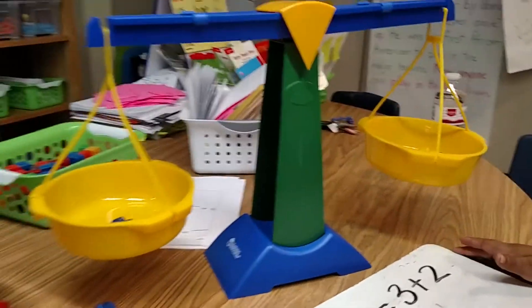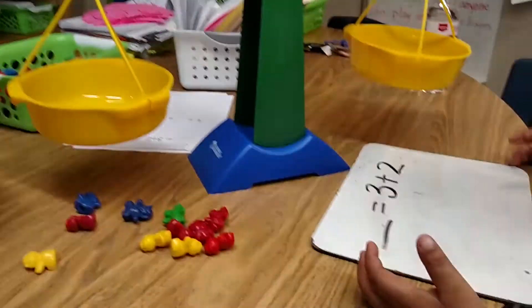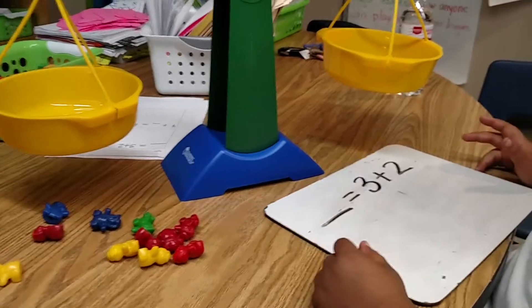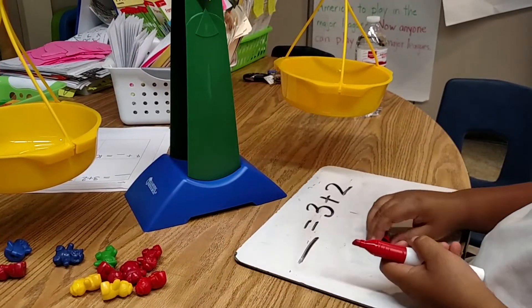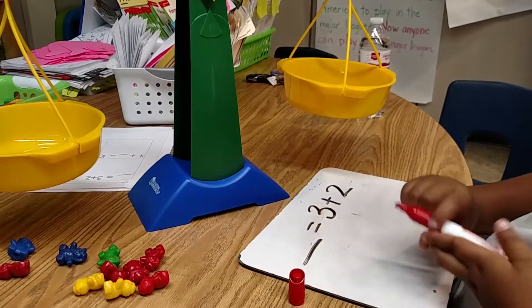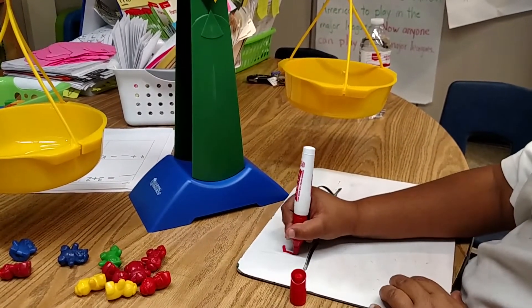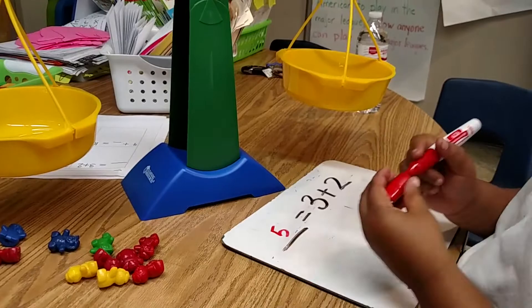Yeah? So what number should we write on the blank right there? Five. Okay, go ahead. Okay, let's try another one for me.